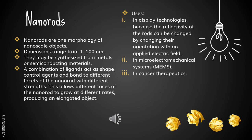Nanorods are one morphology of nanoscale objects with dimensions ranging from 1 to 100 nanometers. They may be synthesized from metals or semiconducting materials. A combination of ligands and shape-directing agents bond to different facets of the nanorod with different strengths, allowing different faces to grow at different rates and producing an elongated object. The uses of nanorods include display technologies, where the reflectivity can be changed by altering their orientation with an applied electric field, micro-electromechanical systems MEMS, and cancer therapeutics.